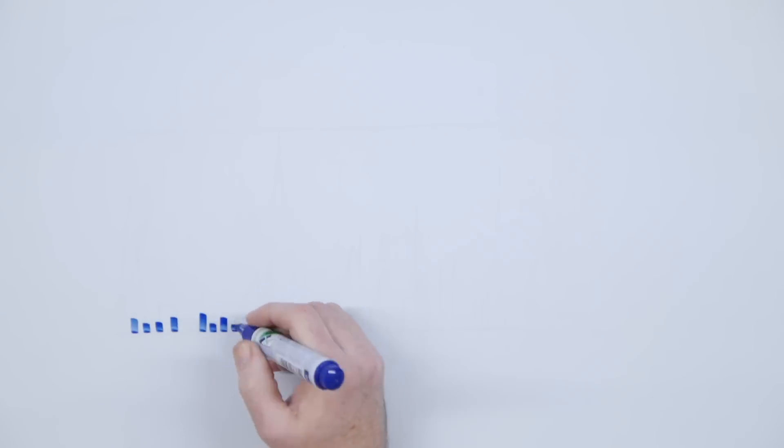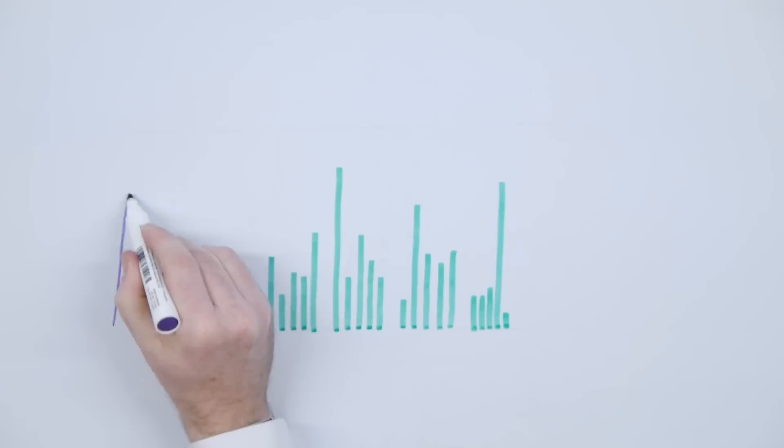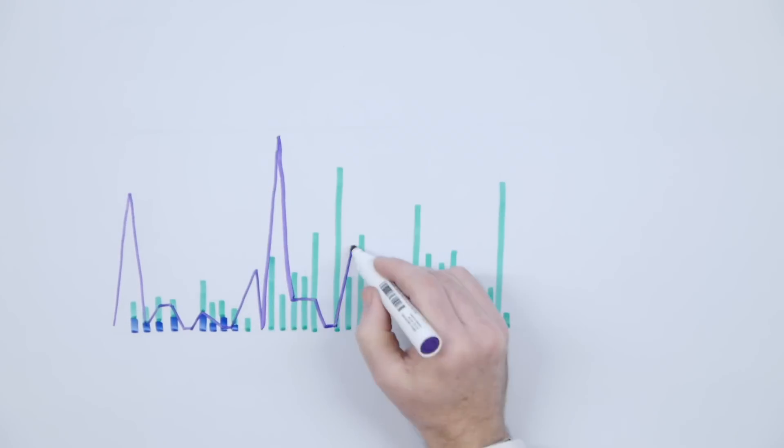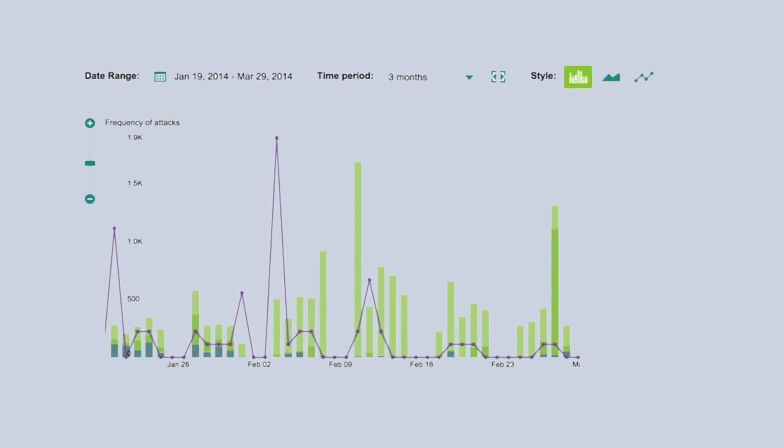We realize that no matter how much threats and attackers have changed over the years, security still comes down to understanding network traffic. Arbor's goal has always been to provide a richer picture into networks and more security context, so customers can solve problems faster and help reduce the risk to their business.